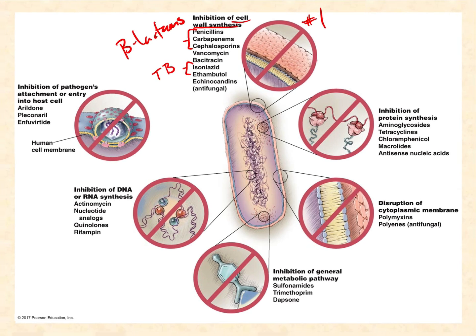The next most common are the protein synthesis inhibitors, which almost always target the bacterial ribosome. It's a little tricky because we have ribosomes as well and we don't want to knock our own out, but bacterial ribosomes are different enough from human ribosomes that we can achieve selective toxicity. The most important protein synthesis inhibitor groups are the aminoglycosides, tetracyclines, and macrolides. Chloramphenicol is used in research and some developing nations because it's cheap, but it's also really toxic, so most countries avoid using it in live humans.